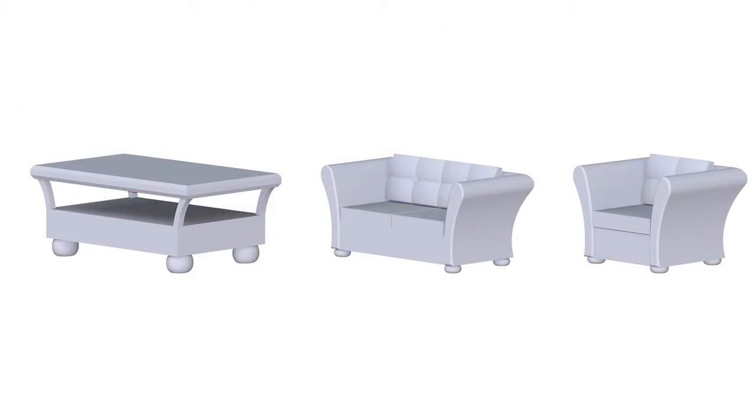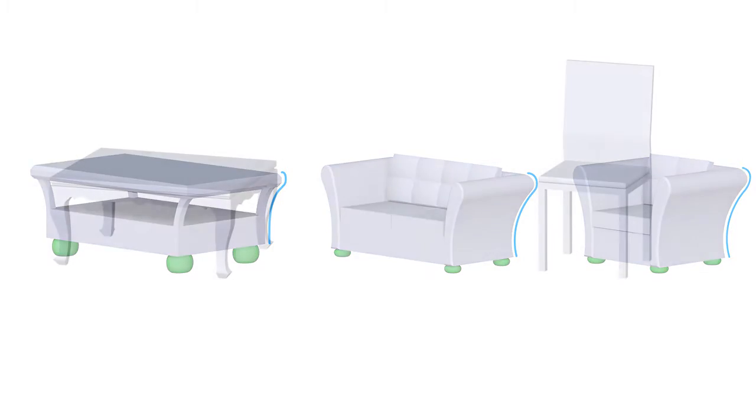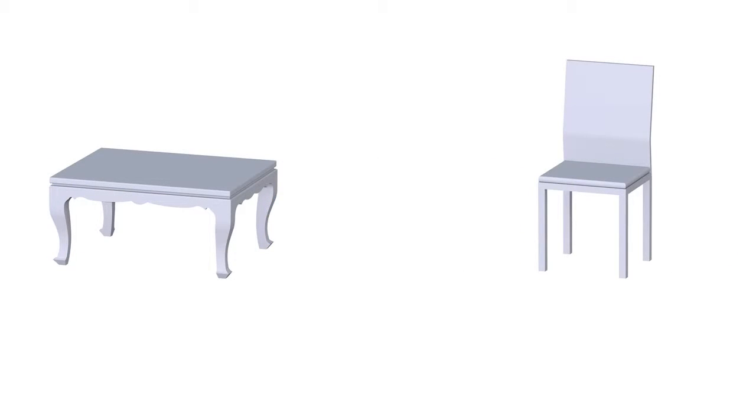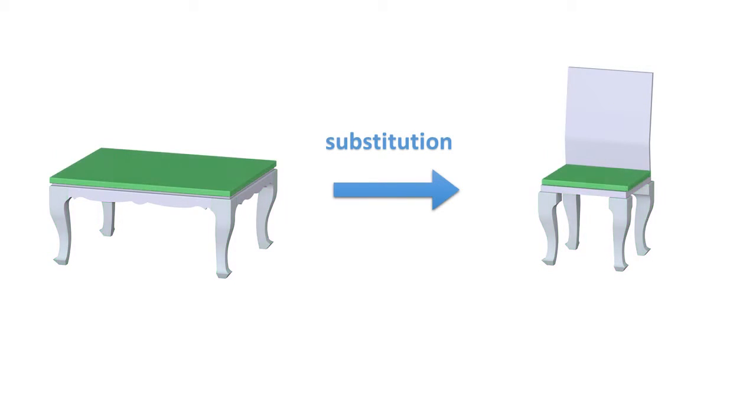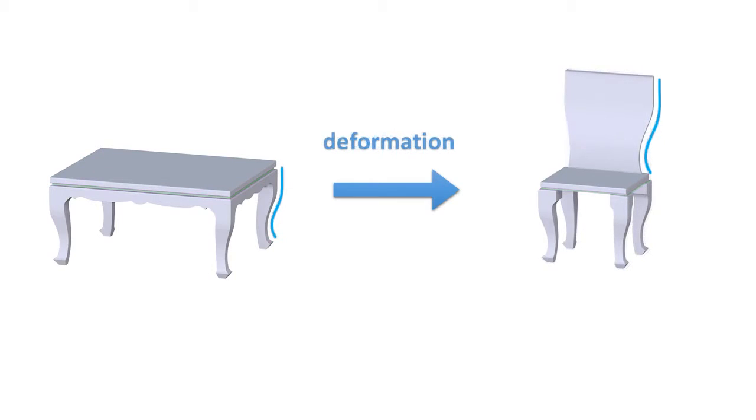Our algorithm is motivated by observations about human perception of style hinted at by art history literature. Same style objects frequently have similarly shaped elements, as well as similar dominant curves. Following these observations, we transfer the exemplar style to a target shape via a sequence of element-level operations, including element substitution, curve-based deformation, element removal, and addition.